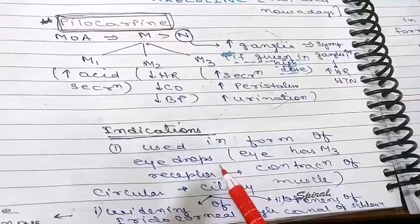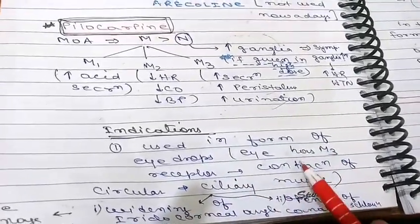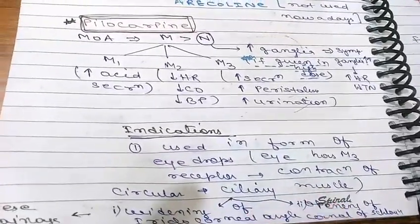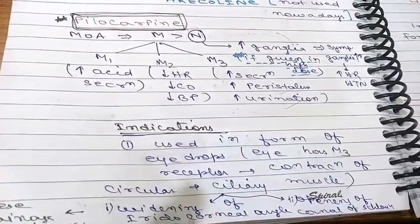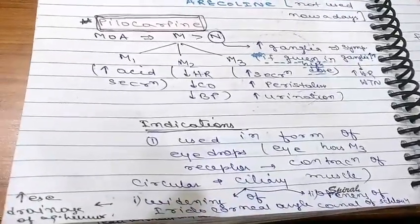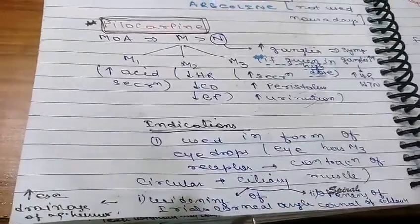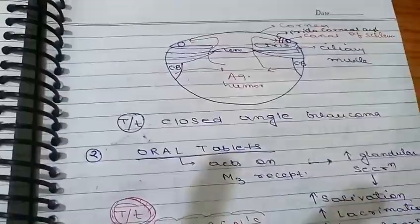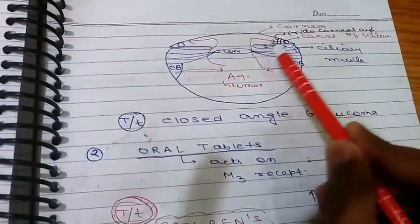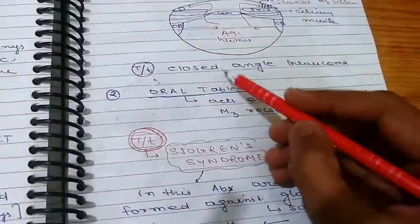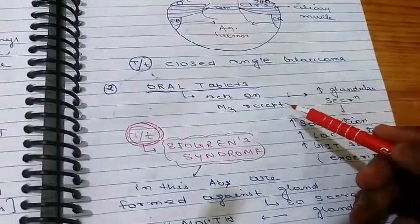Pilocarpine is used mainly in the form of eye drops. The eye has many M3 receptors, and stimulation of M3 receptors leads to contraction of the circular and ciliary muscles. This causes widening of the iridocorneal angle and opening of the Canal of Schlemm, leading to increased drainage of aqueous humor. You can see: the cornea, the iris, the iridocorneal angle, and the Canal of Schlemm — because of this mechanism it can be used in closed-angle glaucoma.